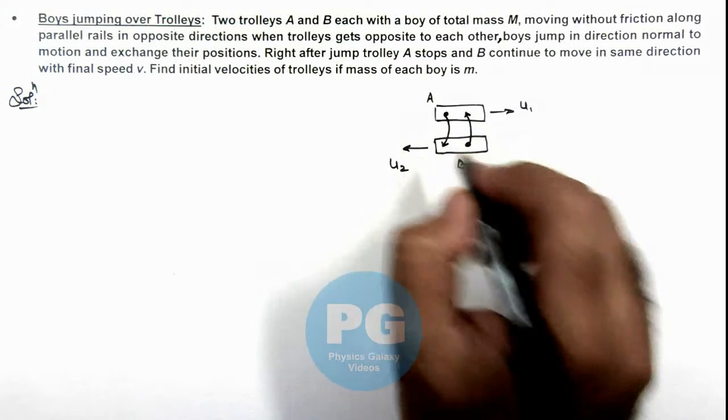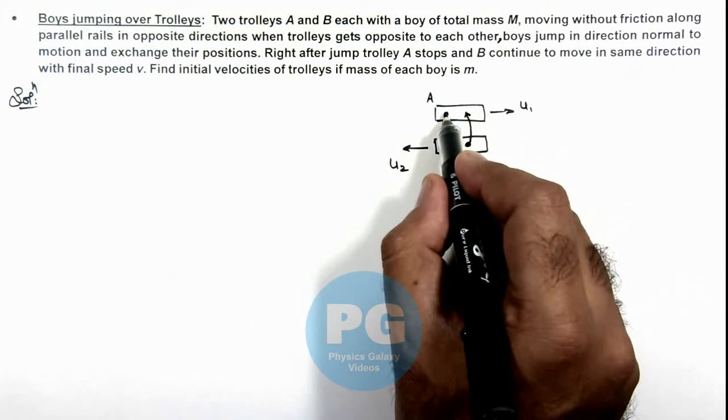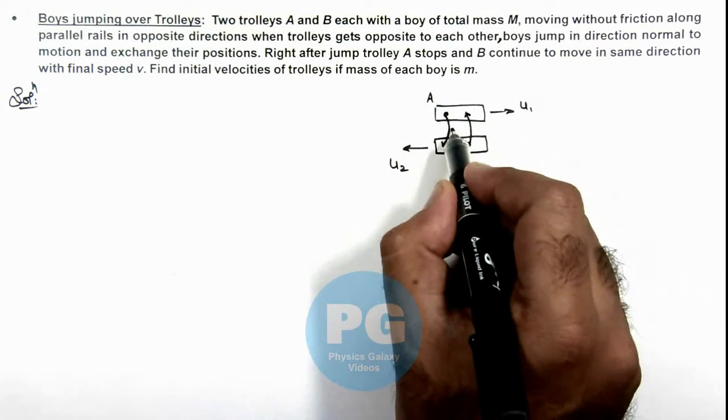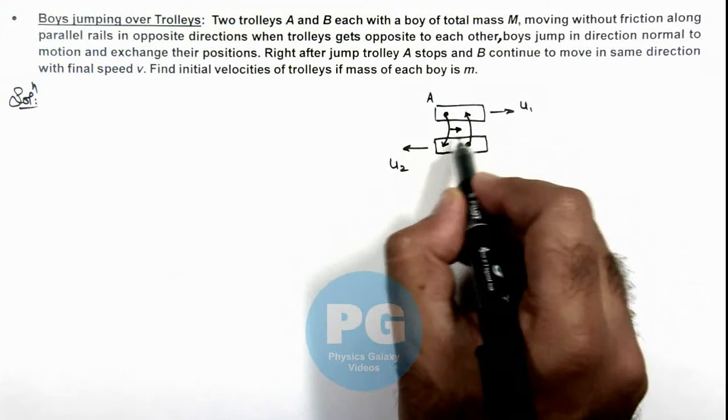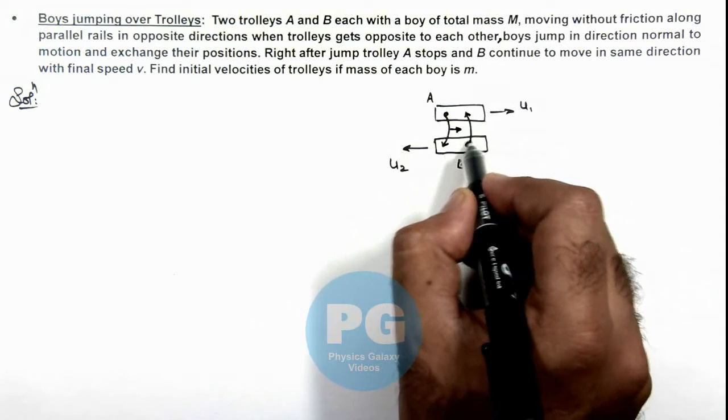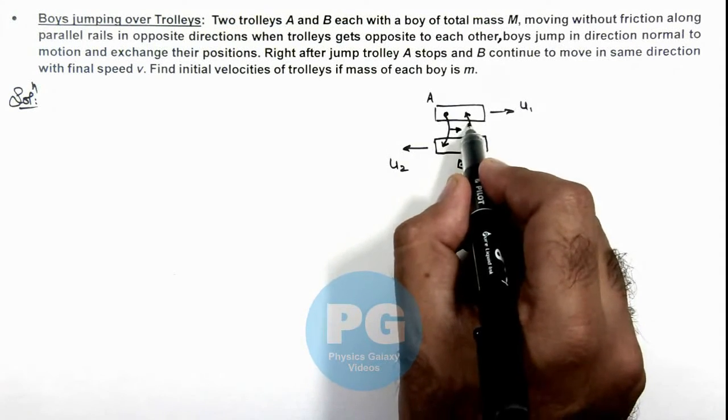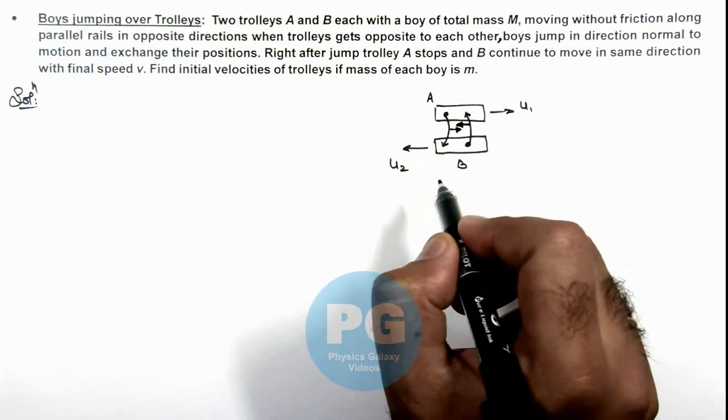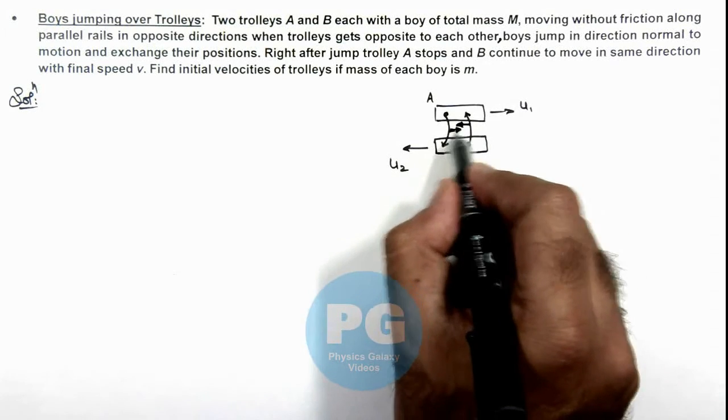Each boy is having a mass m. When the boy of A jumps off to B, it would be having a velocity u1 toward right, and the boy of B when jumps on A, it would be having a velocity toward left. Now in this situation here we can see.